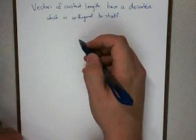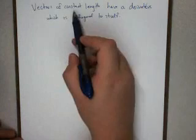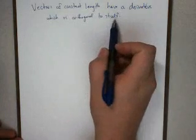This section focuses on vectors, the fact that vectors of constant length have a derivative which is orthogonal to itself.